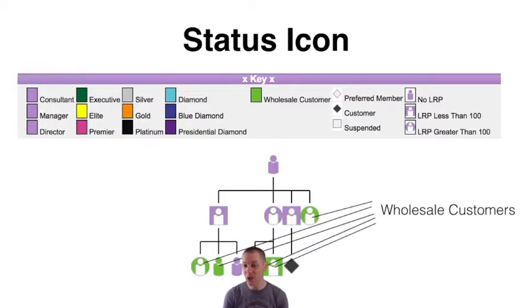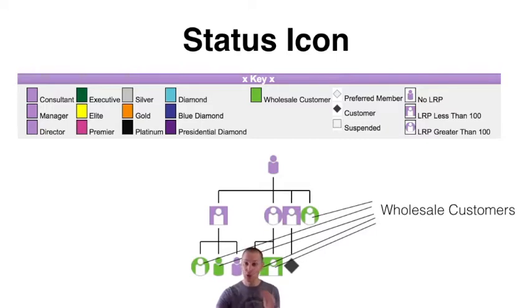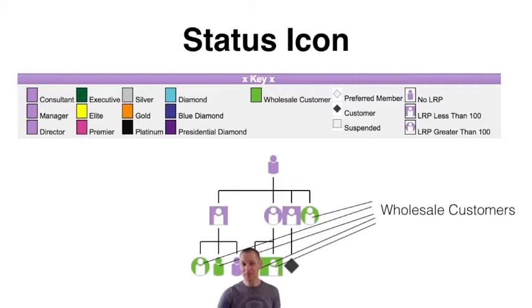How can you tell if someone is a wholesale customer on your team? On your team tab under the graphical tree, everybody who is a wholesale customer will be green. When you click on them it still says wellness advocate, but they are a wholesale customer if they're green. There are three versions of this green icon: someone who has no LRP, someone who has LRP of less than 100, or an LRP of greater than 100. If they're green in any of those shapes, they are a wholesale customer.